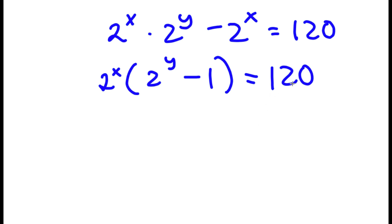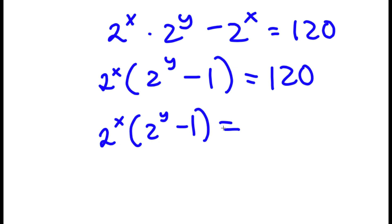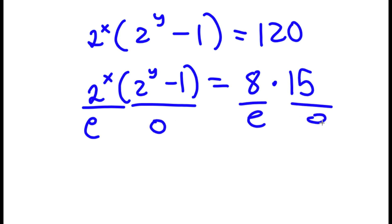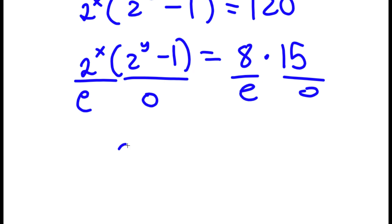Now 120 is the same thing as 8 times 15. Notice that 2 to the power of x will always be an even number, and 2 to the power of y minus 1 — since 2^y is even, even minus 1 is odd — will always be odd. So we have an even number times an odd number equal to 8 (even) times 15 (odd). This means 2 to the power of x equals 8 and 2 to the power of y minus 1 equals 15.